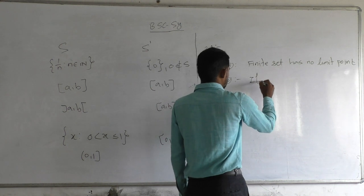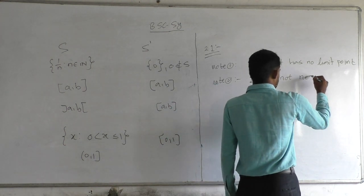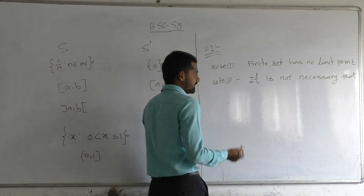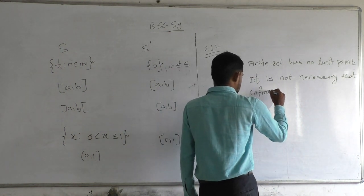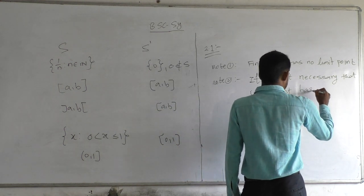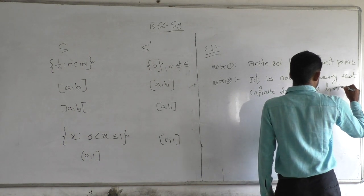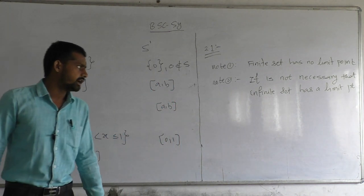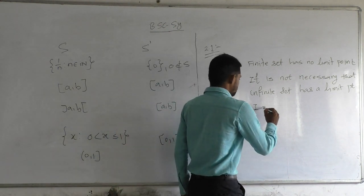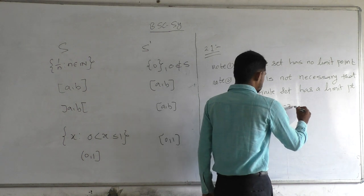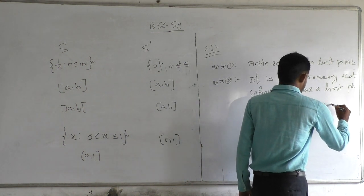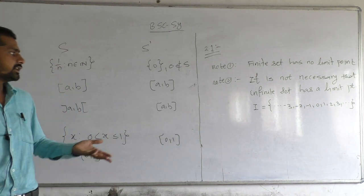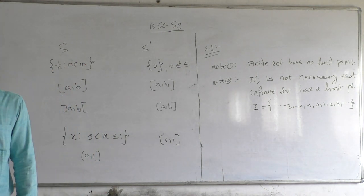Note 2: It is not necessary that an infinite set has a limit point. For example, the set of integers is an infinite set but it has no limit point. The set of integers and set of natural numbers are infinite sets but there is no limit point for these sets.